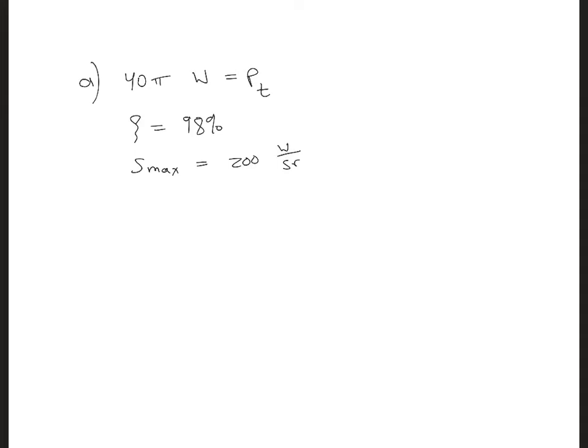Ster radians is the unit solid angle. To solve for the directivity, we need S max over S average. We already have S max, so we need to find S average. And we want S average in units of watts per ster radians also, so that the units will be consistent in the numerator and in the denominator.